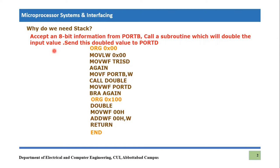The subroutine we are going to call in the main program will double the value — make it twice. Whatever value is received from port B is going to be doubled using this subroutine, and then the double value will be sent to port D. Now looking at the code: first, this is our assembler directive — it is not an instruction. ORG 00 hex means we will start our program memory at address 00. At address 00, the very first instruction is MOVLW 00, which makes the working register 00, and we save it to TRISD. These two lines make port D an output port.